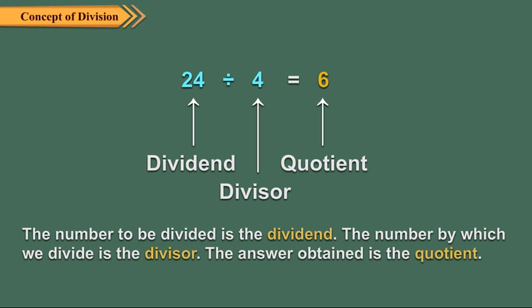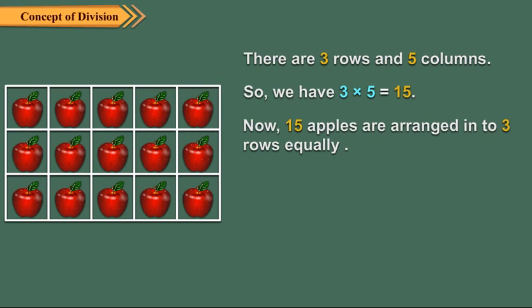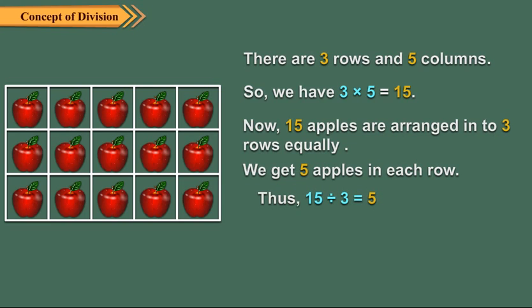Children, you know division is the inverse of multiplication. But how? Let us explain it. Here, 15 apples are arranged into three rows equally. We get five apples in each row. Thus, 15 divided by 3 is equal to 5.